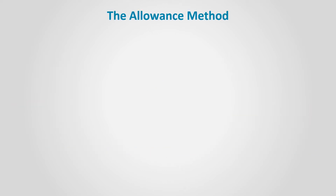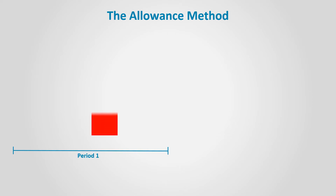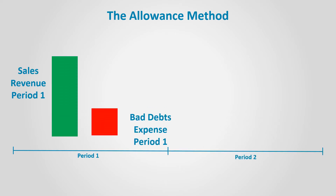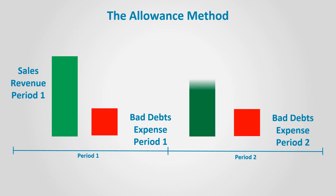The allowance method. The basic concept is this: bad debts expense related to sales of a period must be matched with the sales in the same period. So bad debts expense of period one is matched with the sales revenue of period one, and bad debts expense of period two is matched with the sales revenue of period two.